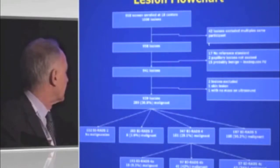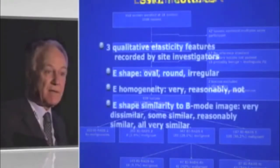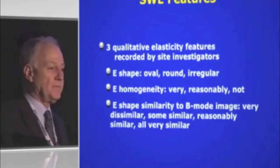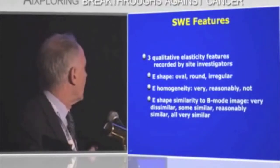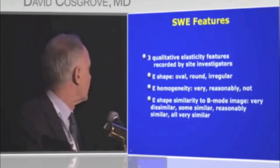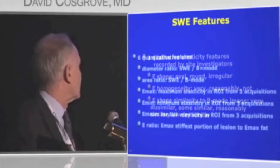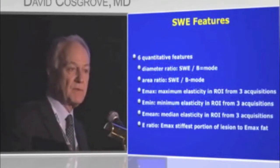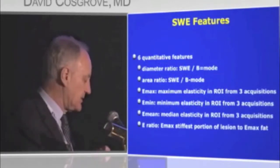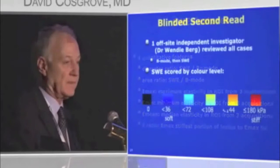The distribution of BIRADS 4 was also fairly predictable. The shear wave features fell into two families: qualitative—subjectively looking at shape, homogeneity, and similarity between B-mode and elastography—and quantitative, which included linear or area measurements comparing shear wave to B-mode, as well as elasticity measurements on the ROI.